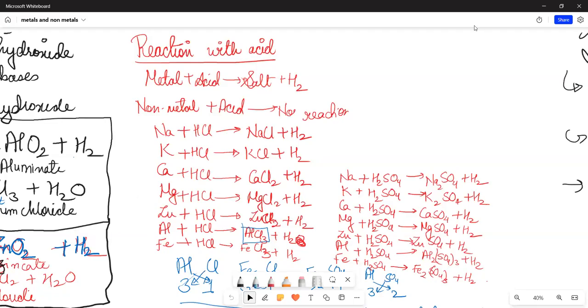The reaction with acid - now metals will react with acid to form salt and water. The same reaction has been studied with acid-base salts. The metal which reacts with acid will produce salt plus water. Non-metal acid will react similarly. When we see the reaction with water...